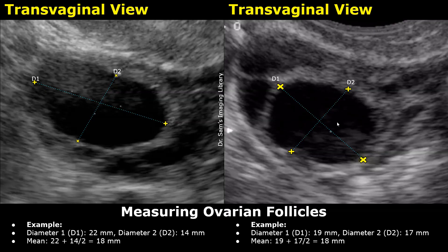This is another example. Diameter D1 is 19 millimeters and diameter D2 is 17 millimeters. Mean diameter is (19 + 17) / 2 = 36 / 2 = 18 millimeters.